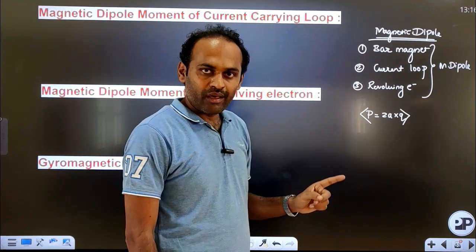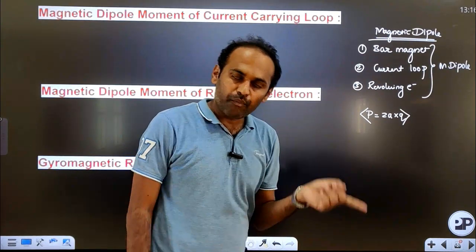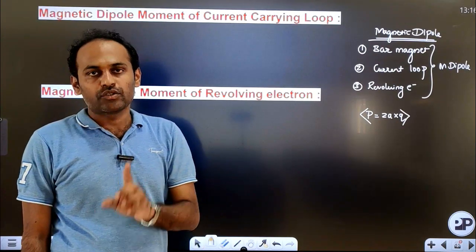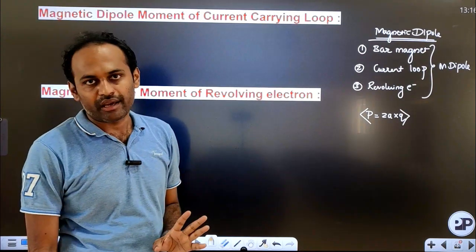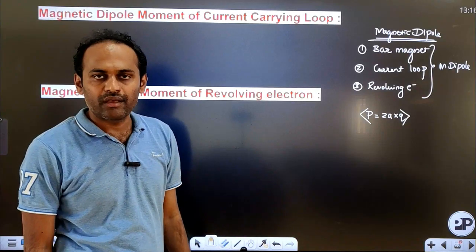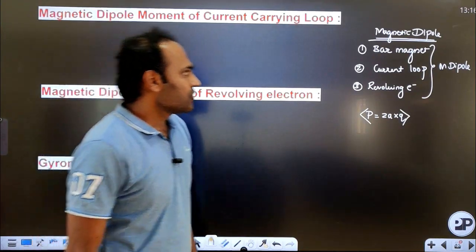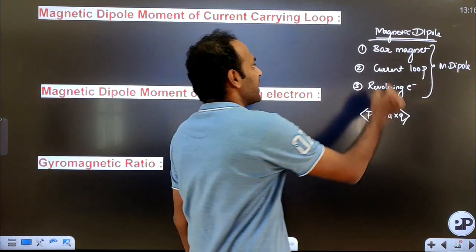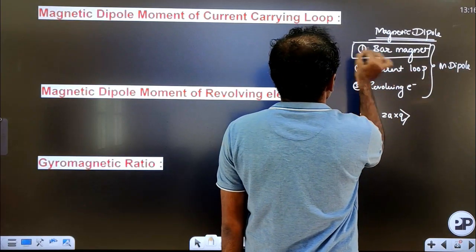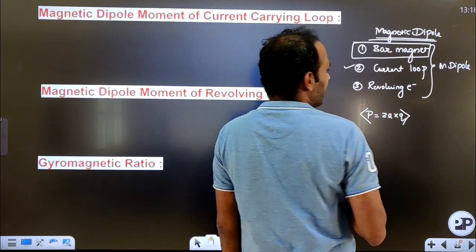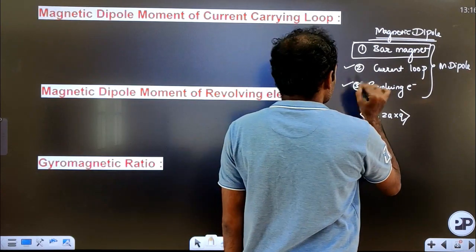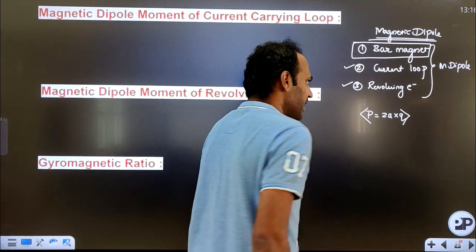These are the three types of magnetic dipoles. The magnetic dipole moment formula — we should know it so that we can calculate the answers. Bar magnet as a magnetic dipole will be discussed in the chapter magnetism and matter. Now we want to discuss the magnetic dipole moment of a current carrying loop as well as the revolving electron.